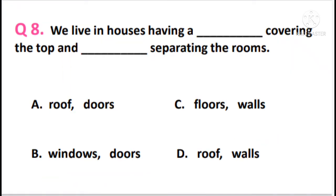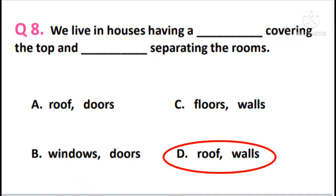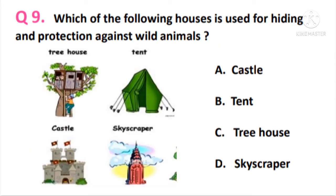Question 8. We live in houses having a dash covering the top and dash separating the rooms. The answer is option D — we live in houses having a roof covering the top and walls separating the rooms.